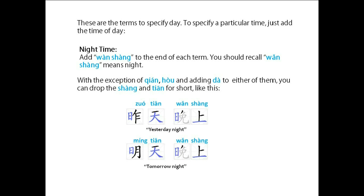With the exception of 前, 后, and adding 大 to either of them, you can drop the 上 and 天 for short, like this: 昨晚 (yesterday night), 明晚 (tomorrow night).